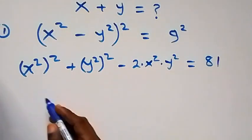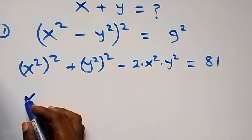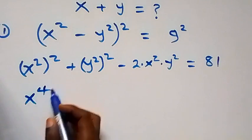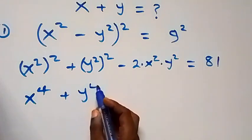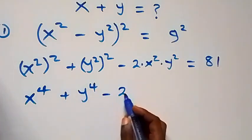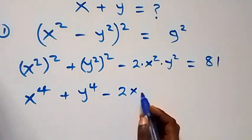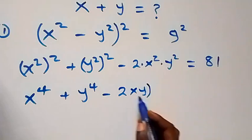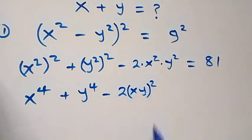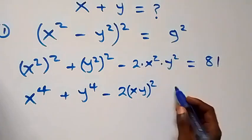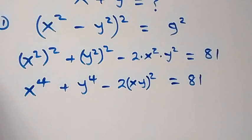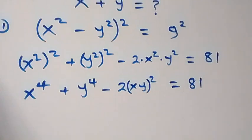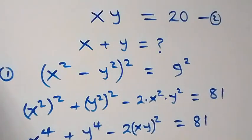This simplifies to x raised to the power 4 plus y raised to the power 4 minus 2xy all squared, which equals 81 from the law of indices. From equation two, we have xy equals 20.